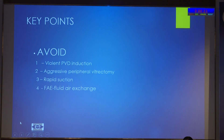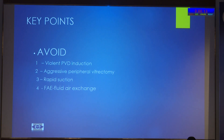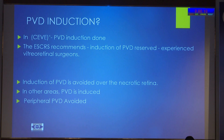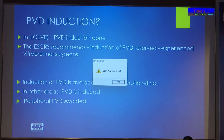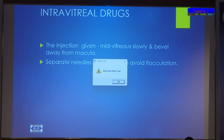Avoid violent PVD induction; aggressive peripheral vitrectomy and rapid suction should be avoided. Fluid-air exchange should be avoided in cases of endophthalmitis. Regarding the role of PVD, ESCRS recommends it only in the case of experienced retinal surgeons. In complete endophthalmitis vitrectomy study cases, PVD induction was advised, but areas of necrotic retina should be avoided. Intravitreal antibiotics should be given in the mid-vitreous cavity slowly, with the bevel always away from the macula, using separate needles to avoid flocculation.